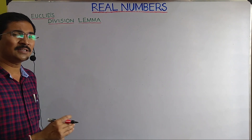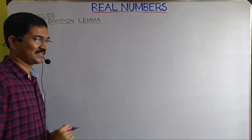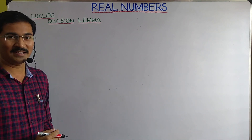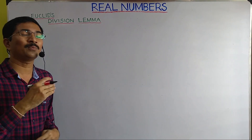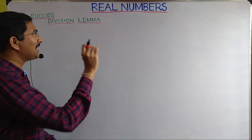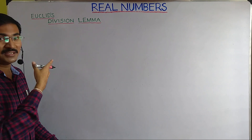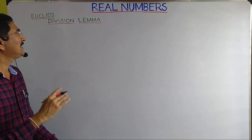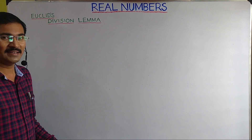Why is it called Euclid's Division Lemma? A lemma is a proven statement. Euclid has proved it, and it is used to prove some other statement. This lemma deals with division, hence it is called division lemma. Since it was given by Euclid, it is called Euclid's Division Lemma. We will make use of this lemma to prove many things in this chapter.